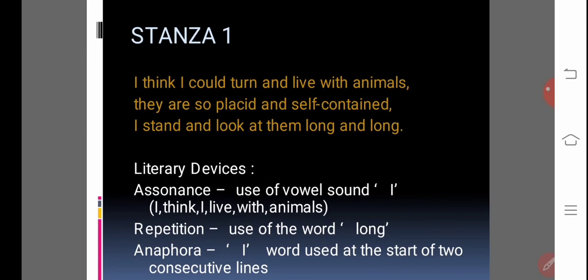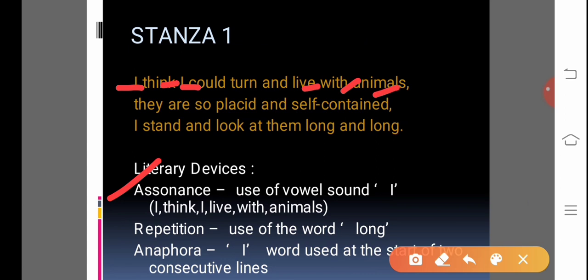Now we will go through Stanza 1. We will go through the literary devices used in this. Stanza 1: I think I could turn and live with the animals. They are so placid and self-contained. I stand and look at them long and long. Literary devices are written here for you. Assonance is used - that is the use of vowel sound. You can see here I, think, I, live - in animals, I is used.